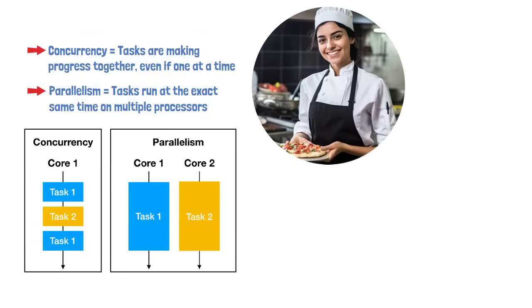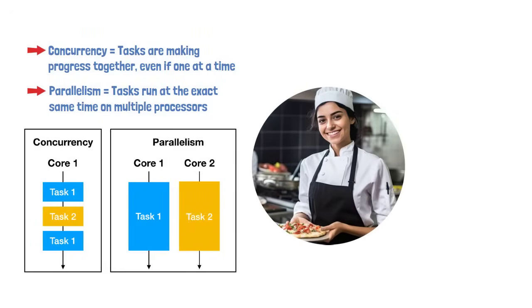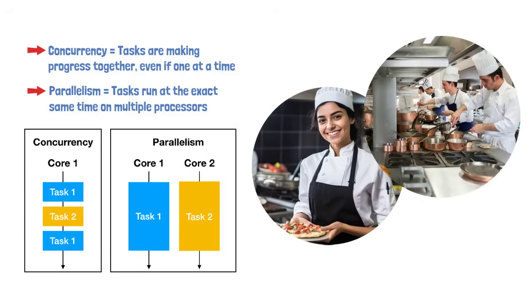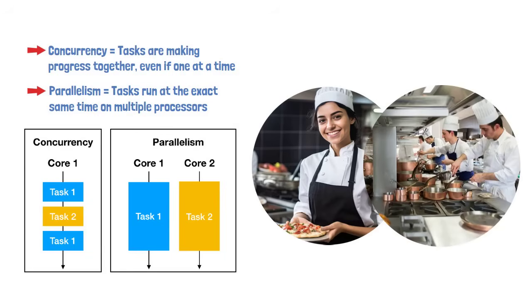Concurrency is like a single chef quickly switching between cooking multiple dishes in one kitchen. Parallelism is like having multiple chefs each cooking different dishes in their own cooking stations simultaneously.